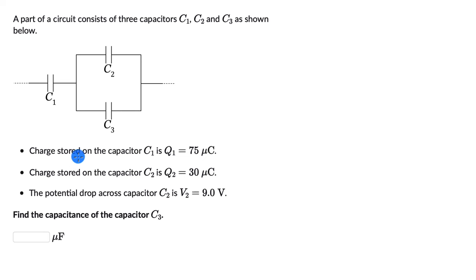We know the charge stored on capacitor C1, Q1, is 75 microcoulombs. Charge stored on capacitor C2 is 30 microcoulombs and the potential drop across C2 is 9 volts. We need to figure out the capacitance of capacitor C3.